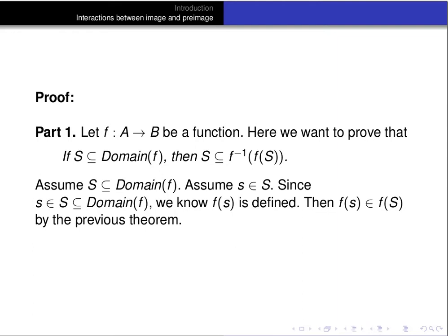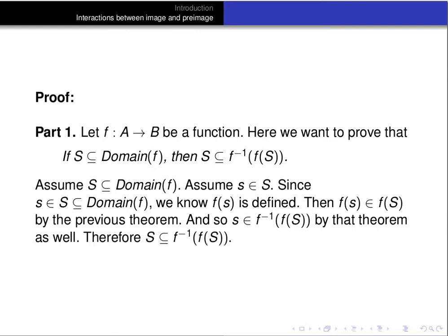Since f(s) is an element of the image of S under f, it follows from the definition of the pre-image — or the previous theorem — that s is going to be an element of the pre-image of f(S). So that proves part 1: we've shown that S is a subset of the pre-image of the image of S.